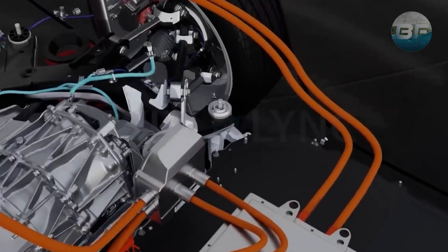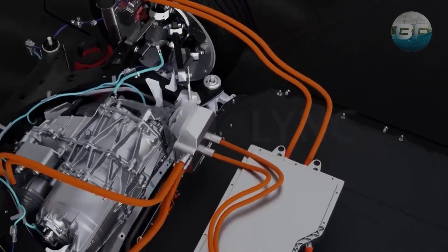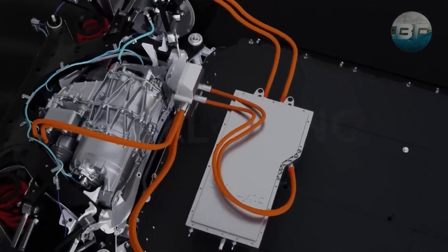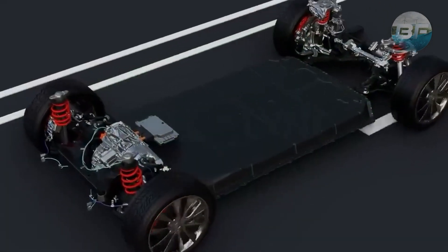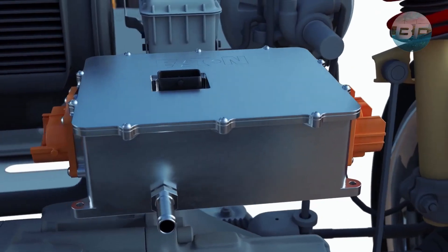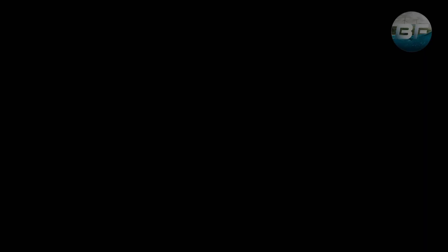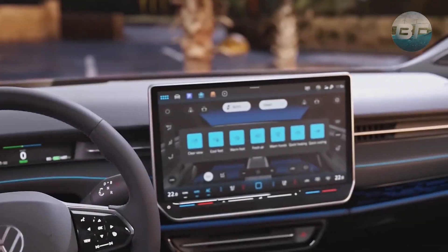In conclusion, the components of an electric vehicle work together to provide a smooth, efficient, and eco-friendly driving experience. The battery stores the energy, the electric motor converts it into mechanical energy, the inverter controls the motor's speed and torque, the DC-DC converter powers the vehicle's accessories,